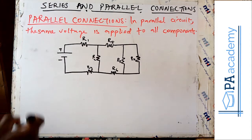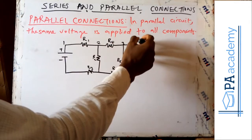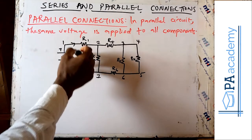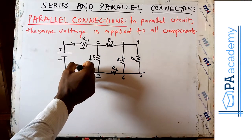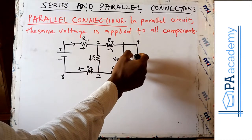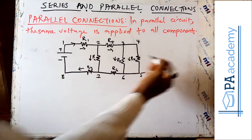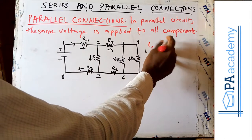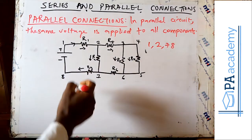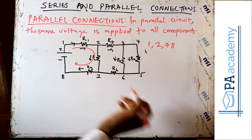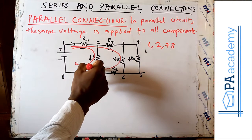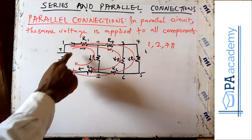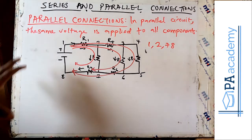What makes it parallel? Let's label these points 1, 2, 3, 4, 5, 6, 7, 8. Now if you look at it, the current is moving in this direction. We have current moving in the direction of 1, 2, 7, 8 — like this. Then we have another one moving like this, and another one moving like this. So unlike series where current follows one path, you can see that here we have three paths. That is what makes it a parallel connection.